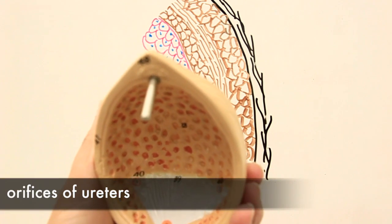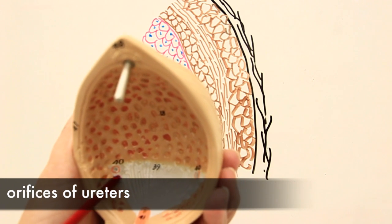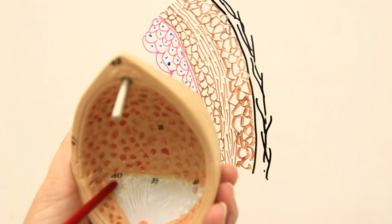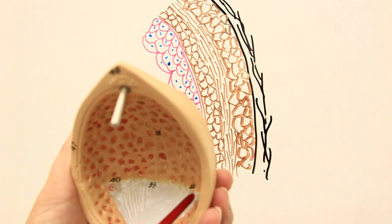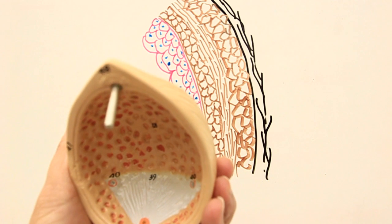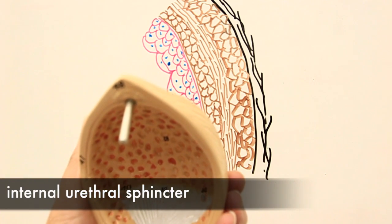The trigone has a base and an apex. The base of the trigone on either side—this number 40—represents the orifices of ureters. So the ureteric orifices are present on either side of the base at the angles of the triangle. Then the apex, here number 41, represents the internal urethral sphincter.